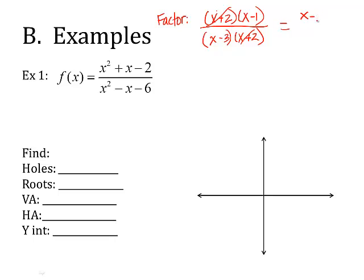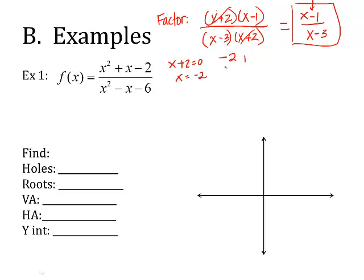When I reduce the equation, what's left is x minus 1 over x minus 3. Now to find the xy coordinate, I take that common factor, set it equal to 0, and solve it. That's just x is negative 2. To find the y coordinate, I plug negative 2 into the remaining equation, x minus 1 over x minus 3. I do negative 2 minus 1 over negative 2 minus 3 and get negative 3 over negative 5 — two negatives make this positive. So my coordinate is negative 2 and 3 fifths. That's the coordinate for the hole.